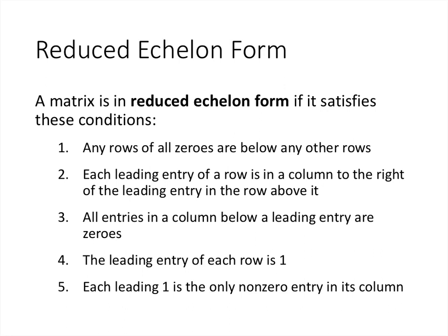The conditions for reduced echelon form include the same first three conditions we already discussed, plus two additional ones. Condition 4: the leading entry of each row has to be the number 1. Condition 5: each leading 1 has to be the only non-zero entry in its column — meaning we need zeros both below and above the leading entry. Condition 5 is stronger than condition 3, so we don't strictly need condition 3 for reduced echelon form, but we'll leave it in to connect back to the regular echelon form.